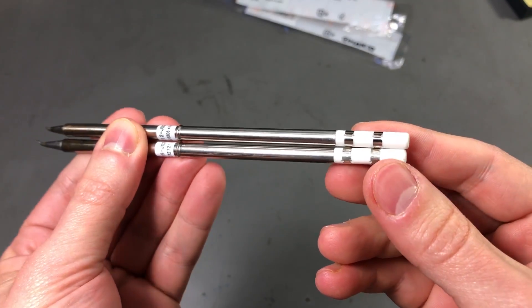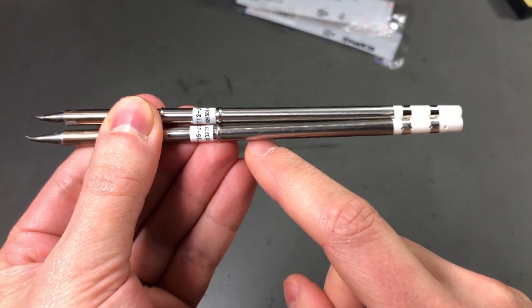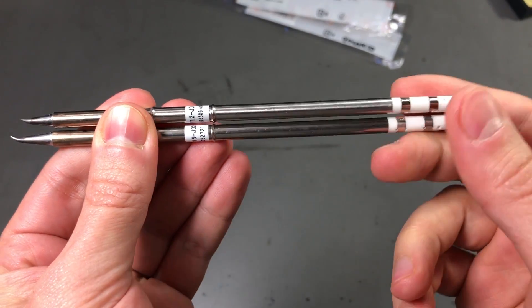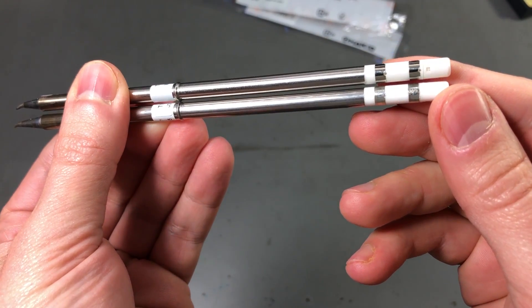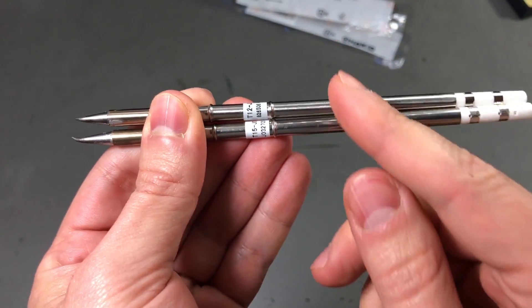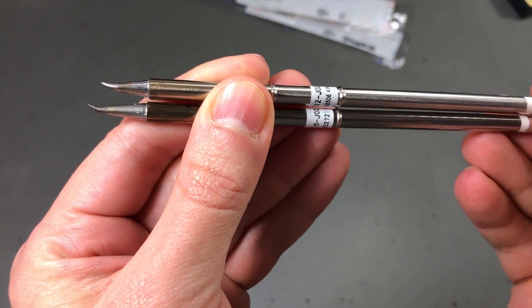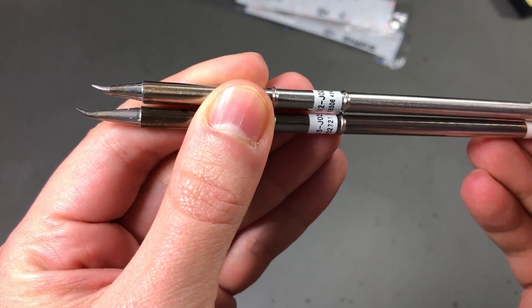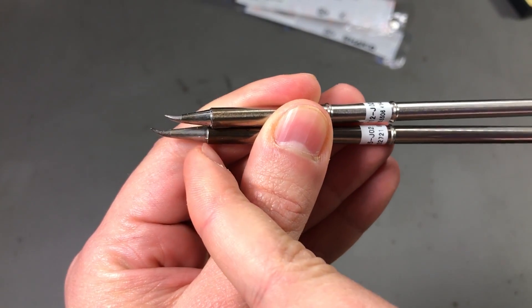So let's take a closer look at these two. They seem very similar, I have the T15 on the bottom, the T12 KSGR on the top and they seem very very similar. They're almost the same length but I can see the T15 is just 3mm longer right here at the tip.